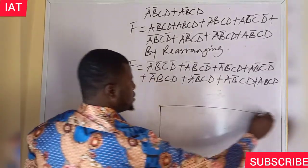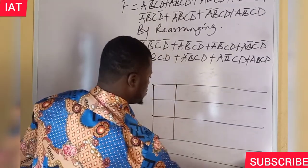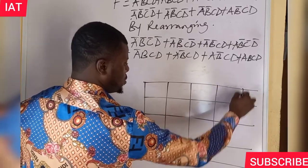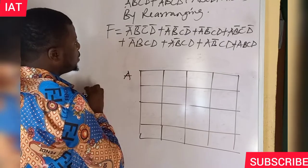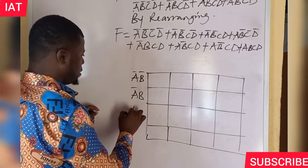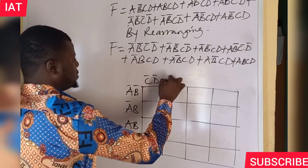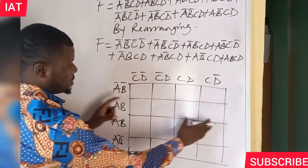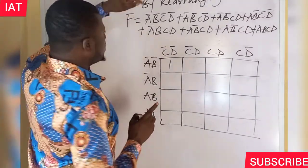The instruction is to represent this in a K-map. This is a four-variable K-map, and because it is a four-variable K-map we are going to have 16 cells — 1, 2, 3, 4, 5, 6, 7, 8, 9, 10, 11, 12, 13, 14, 15, 16. We arrange the variables as A-bar B-bar, A-bar B, A B-bar, A B on one axis, and C-bar D-bar, C-bar D, C D, C D-bar on the other. We then assign each minterm to its corresponding cell.